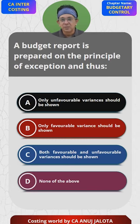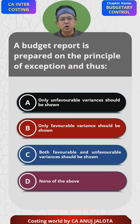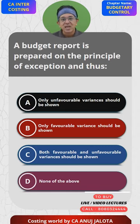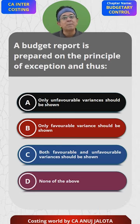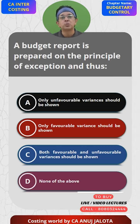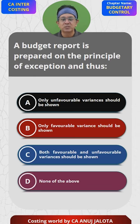A budget report will indicate: have we achieved the budget or have we not? It will tell you where we have achieved and where we have not — what good work we have done, what bad work we have done. Exception is not only bad performance; exception is also good performance. Therefore, both favorable and unfavorable variances should be reported — both of them are exceptions. So option C makes maximum sense.